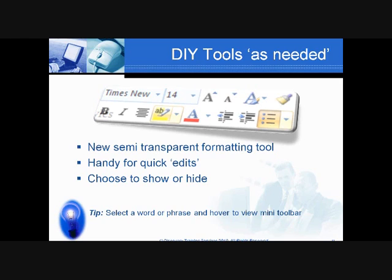Now, for those of you — and I'm one of these — I actually don't like it very much. It gets in my way. I'm one of those fast, messy typers. If you don't like it, you can turn that off via the Office button, Word Options, right there on the popular tools. It's called Mini Toolbar. If you click to uncheck it, you can go ahead and turn that off.